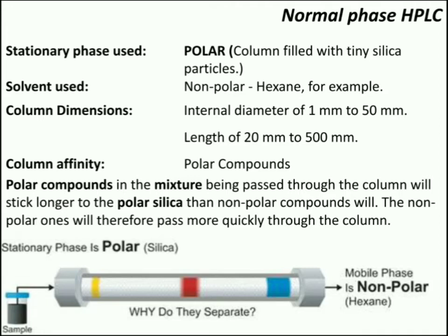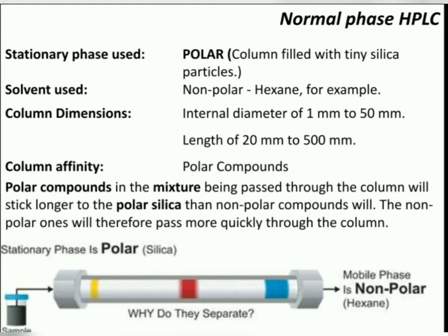In normal phase HPLC, the column affinity is for polar compounds because the polar stationary phase has affinity for polar compounds. So polar compounds in the mixture being passed through the column will stick longer to the polar silica than nonpolar compounds will, and the nonpolar ones will therefore pass more quickly through the column.